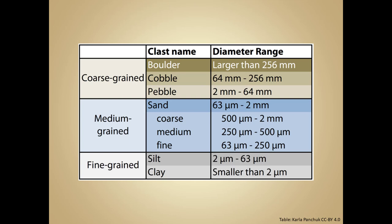Looking at smaller grain sizes, we have a category called sand, which can range from very coarse sand to very fine sand. The coarsest sand will be nearing that 2 millimeter diameter size, whereas very fine sand would be about 1/16th of a millimeter, or about the thickness of a human hair.